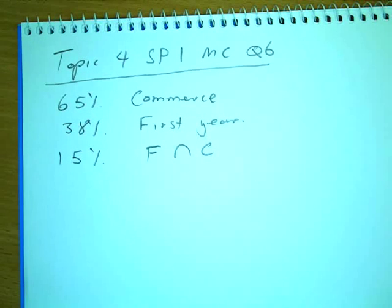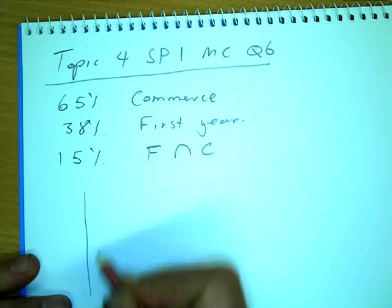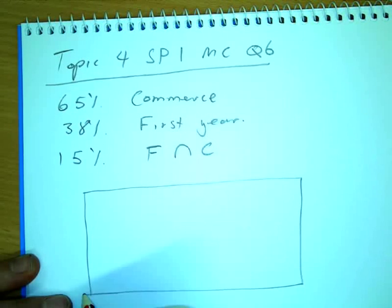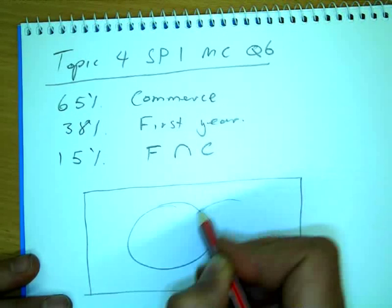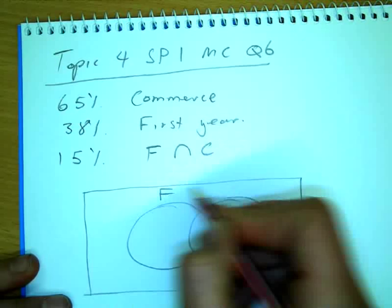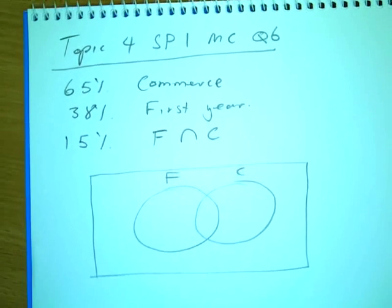Cool? Is that right? Yes. Okay, so let's make a Venn diagram with that info. Now I'm going to label my Venn diagram first year and commerce. You don't have to put A and B.